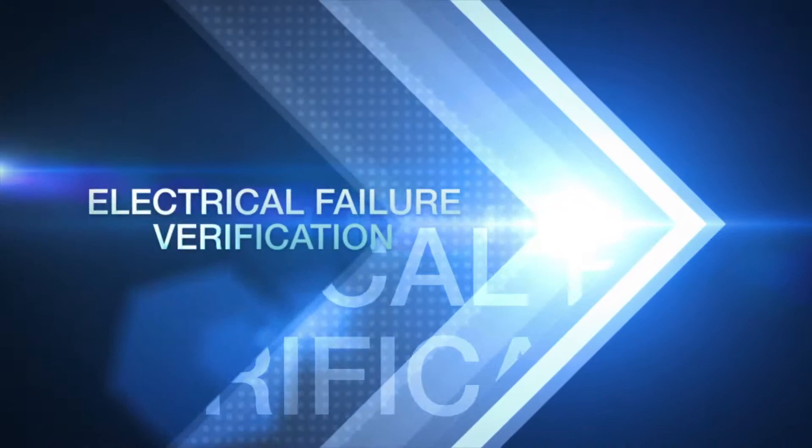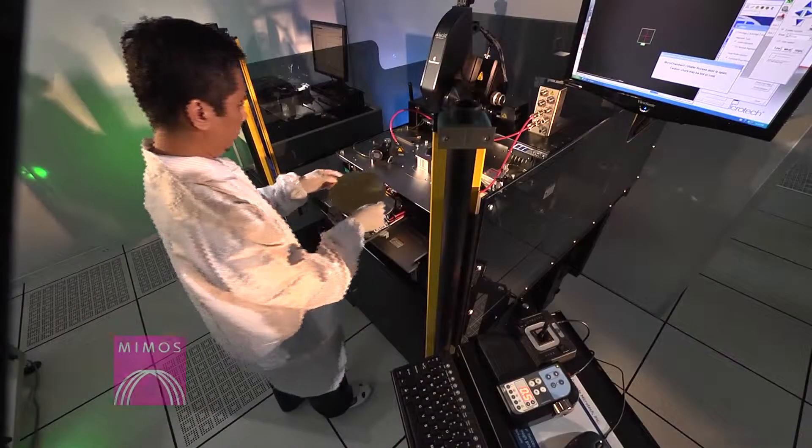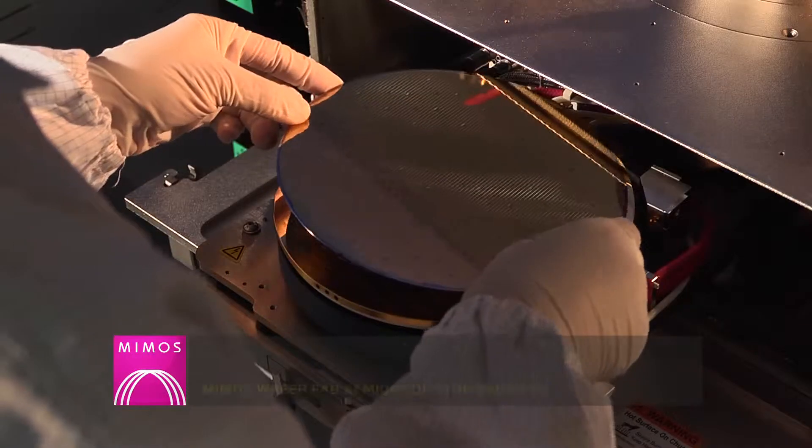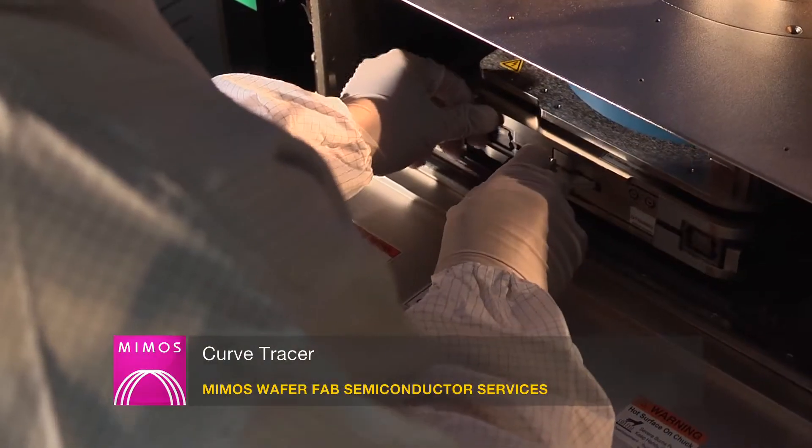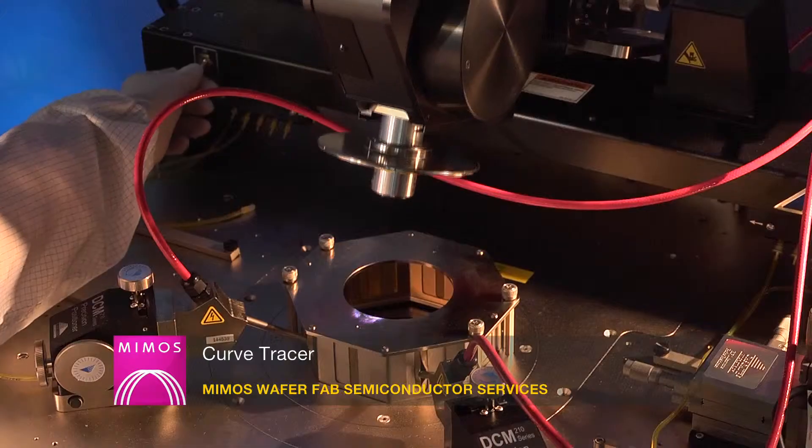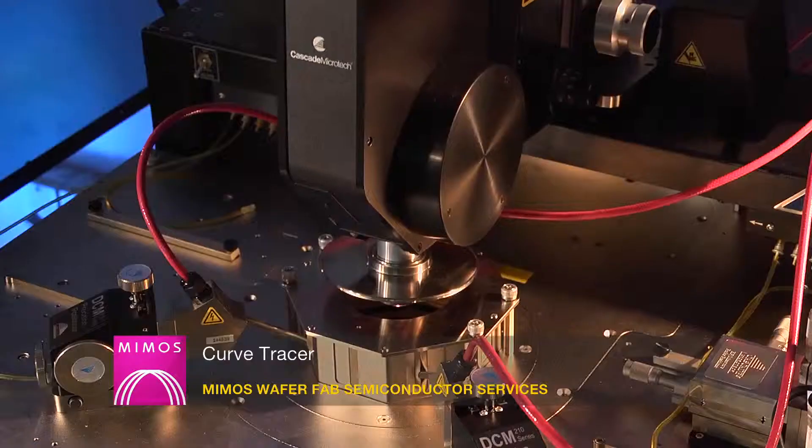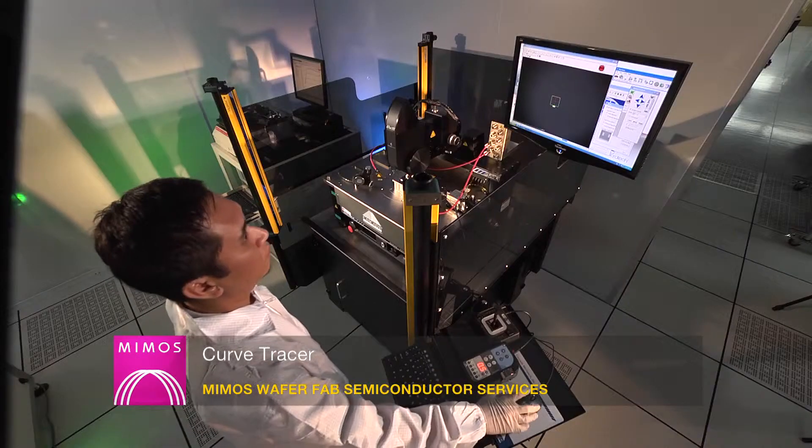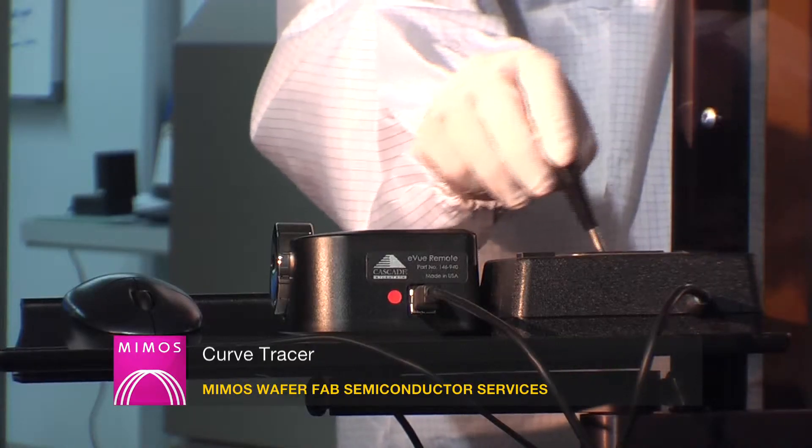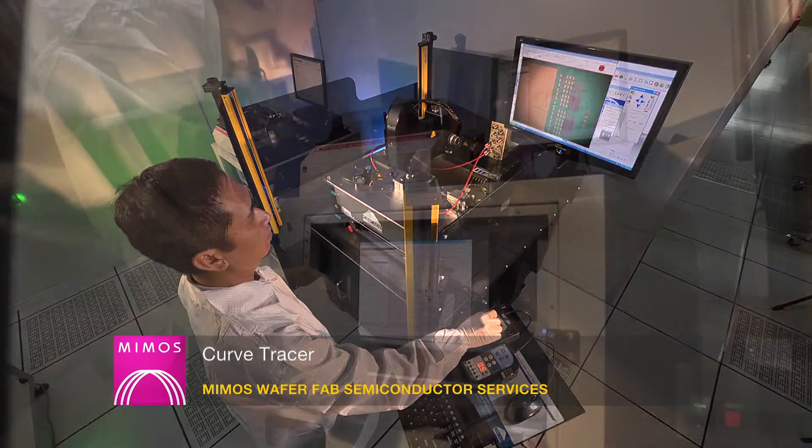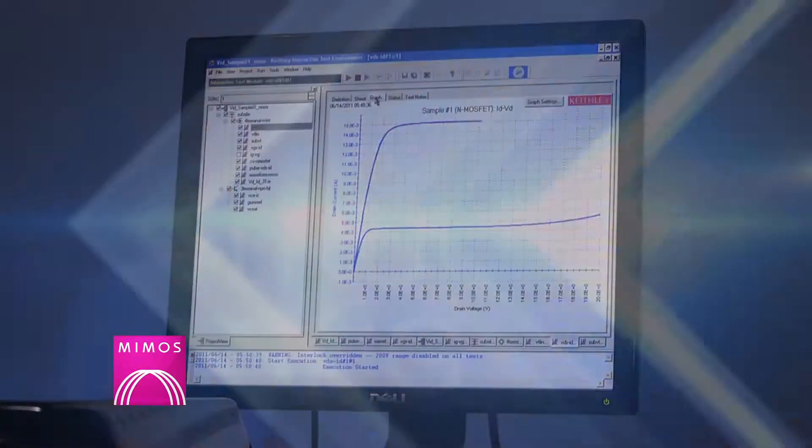Failure analysis process starts with electrical failure verification. MIMOS FA Lab is equipped with a high sensitivity and accurate curve tracer system for logic and high power devices. It is a real time system typically used to view the current versus voltage characteristics of a failed device. It will provide information on failure signature of the device and help to narrow down the possible root cause.